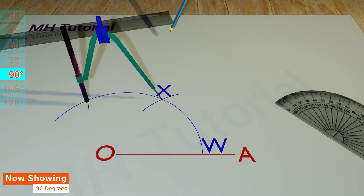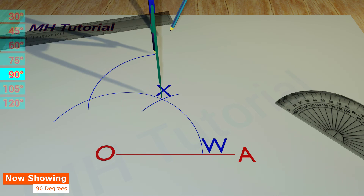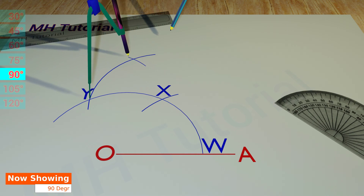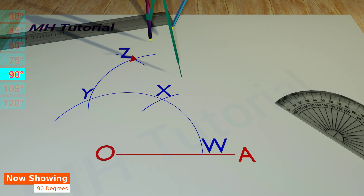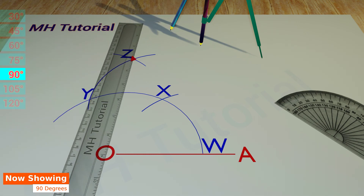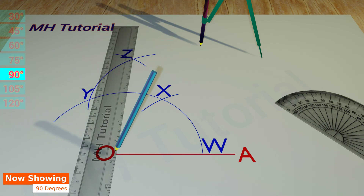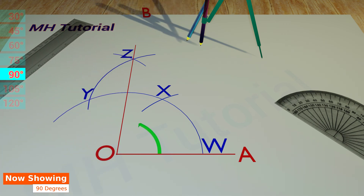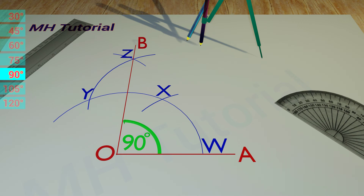Now, with the tip at the point X, another large circle segment with the same radius is taken. This arc intersects the first arc at the point Y. Then, construct an arc from the point Y until it intersects the third arc. This point of intersection is Z. Then, with the help of a scale, a line segment is drawn from the point O to the point Z. This line segment may be named OB. So, the angle AOB is 90 degrees.